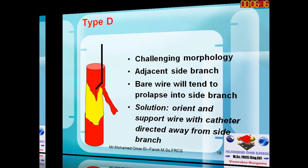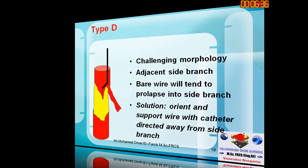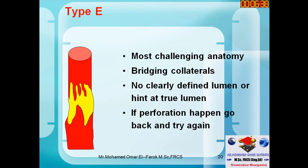For Type D, where the wire always tends to go into the side branch, try using a vertebral catheter oriented the other way and use the bare end of the wire to make a small entry into the fibrous cap, then follow through the rest of the occlusion. This is still a challenging morphology.